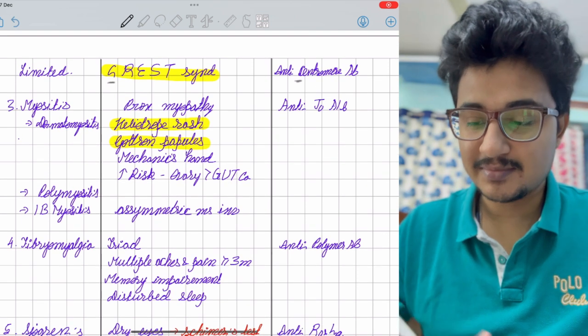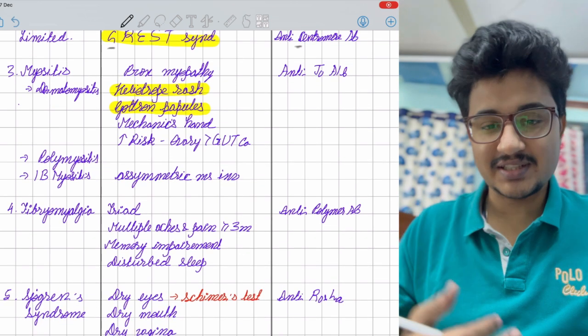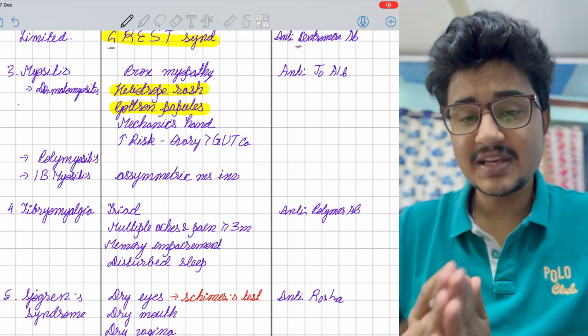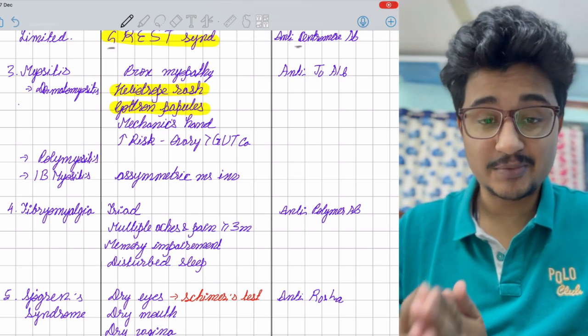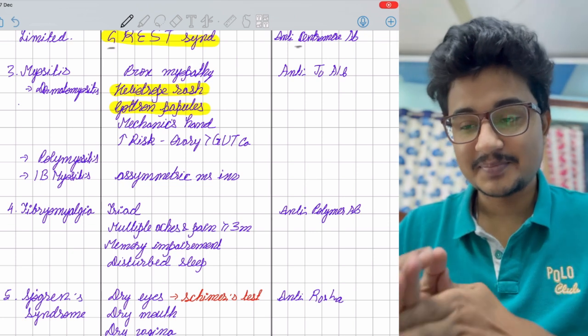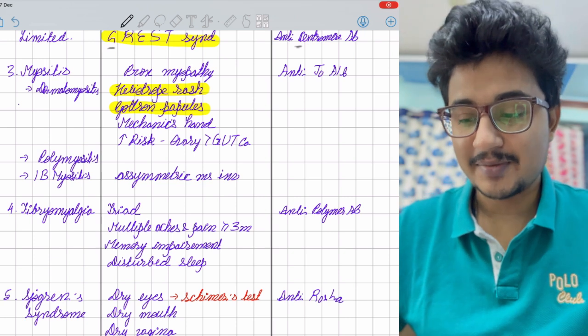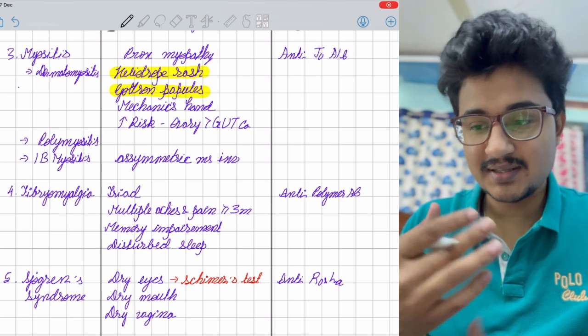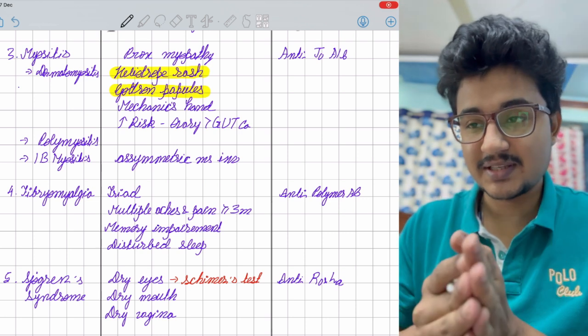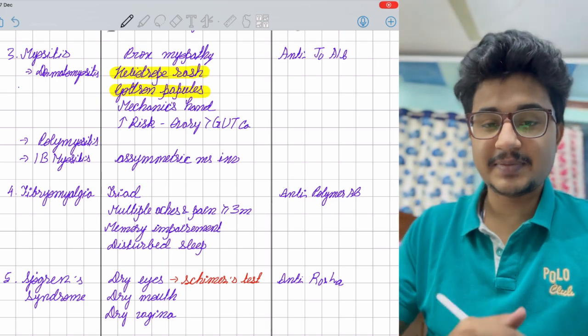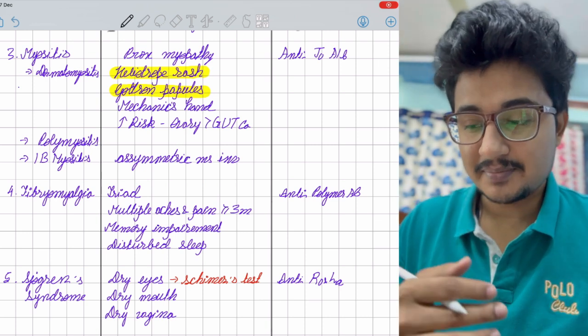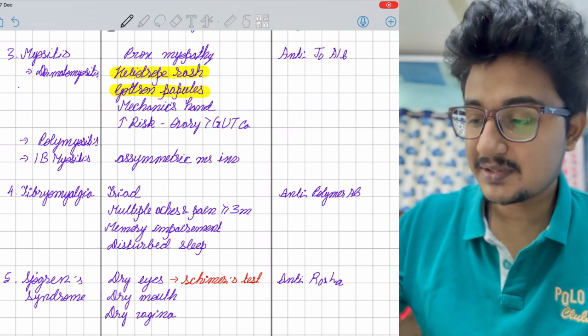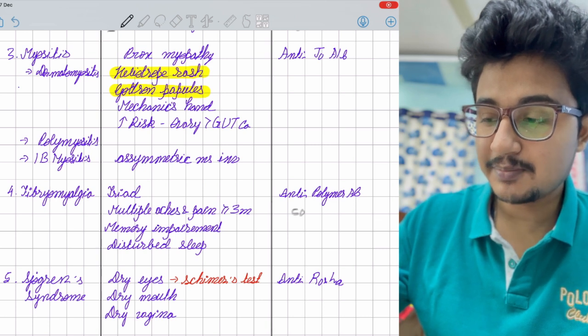A futuristic question is fibromyalgia because many professionals doing nine to five IT jobs are complaining of it nowadays. The triad is muscle pain more than three months, memory impairment, and disturbed sleep. It's a neuropsychiatric disorder treated with gabapentin and pregabalin. Nowadays, 50 to 60 percent of patients are showing positive for antipolymer antibody, so it's in rheumatology also.